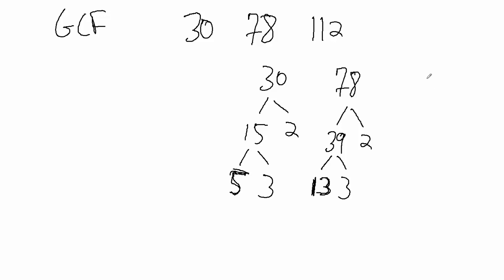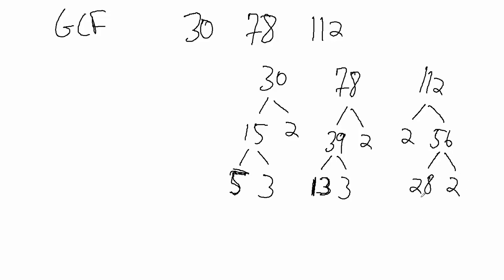What about 112? Well, 112 splits up into 2 times 56. And 56 splits up into 28 times 2. Then 28 splits up into 7 times 4, and 4 splits up into 2 times 2. So that gives us 2, 2, 2, and 7 — all prime numbers. So 112 cannot be split up anymore.